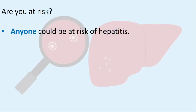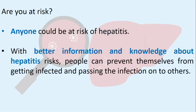Anyone could be at risk of hepatitis, due to the size of the global epidemic which is at least 10 times the HIV-AIDS epidemic. With better information and knowledge about hepatitis risks, people can prevent themselves from getting infected and passing the infection on to others. People should seek testing and learn if they need treatment, as increasing access to hepatitis testing is key to scaling up hepatitis treatment and care.